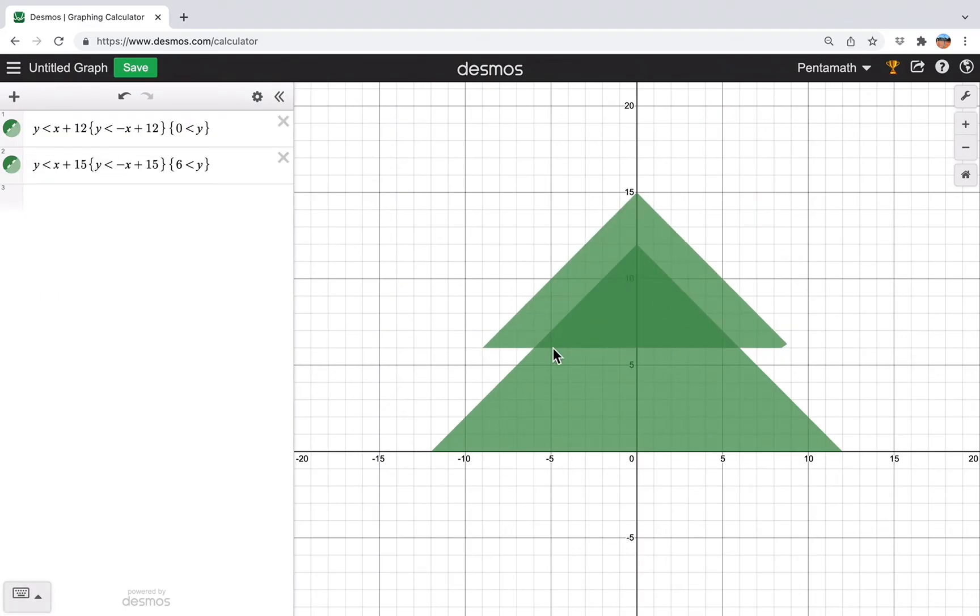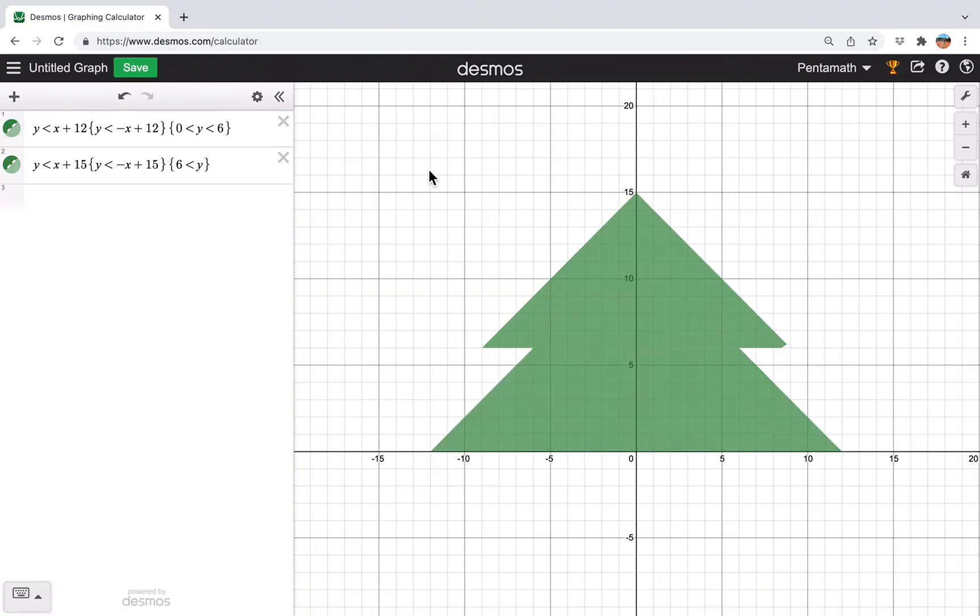Now you notice here that there's a bit of overlap here and it's a slightly darker color, which is not what we really want. So here what I'm just going to do is take this triangle and I'm actually just going to cut it off right there, so that this part doesn't overlap. So I'm going to also make it so that y has to be less than 6. And there you go.